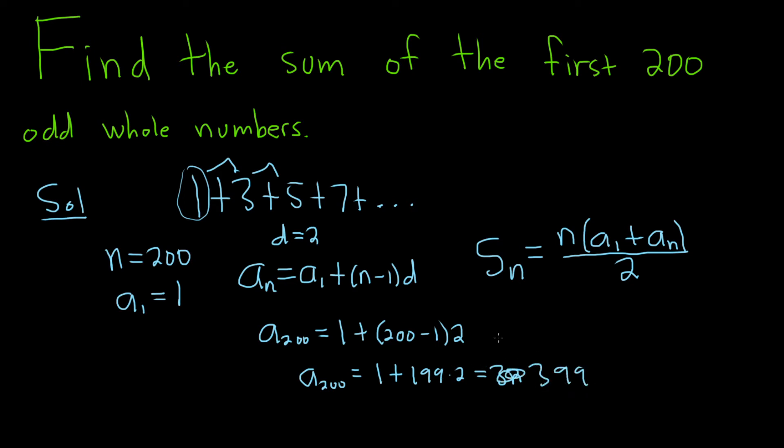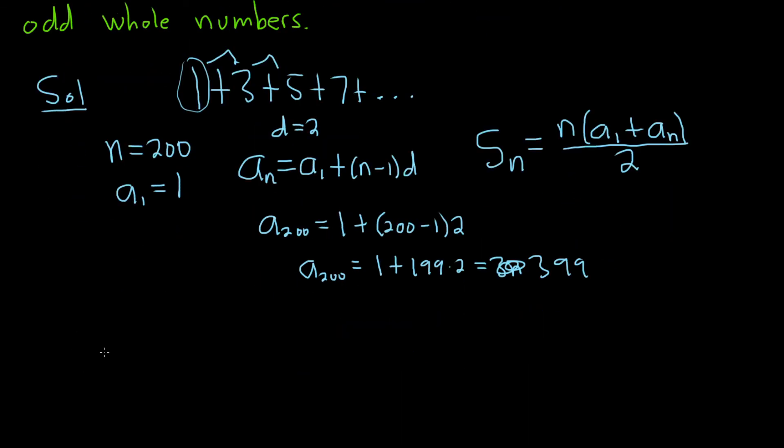All right, so now all we have to do is plug everything into our formula. So s sub 200 is equal to, so here n is 200, a sub 1 is 1, and then a sub 200 is 399. It's all being divided by 2. This is equal to 200 times 400 divided by 2. This will be equal to 40,000. The answer here is 40,000.